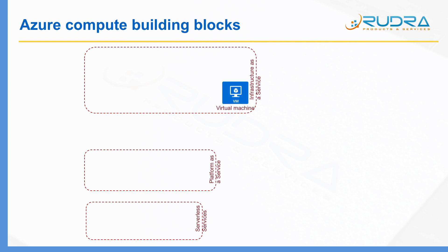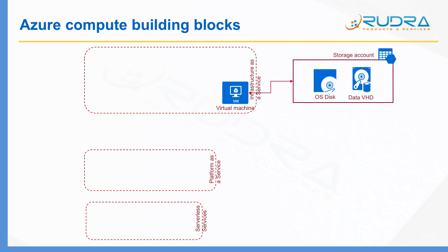Using Azure Virtual Machine, you can deploy different servers such as Windows and Linux within Azure Cloud. When you deploy a Virtual Machine, every VM will have an associated OS and Data Disk. This OS and Data Disk will be stored in a storage account within Azure. There are different ways of provisioning these disks, such as Managed, Unmanaged Disks, and also Standard and Premium.